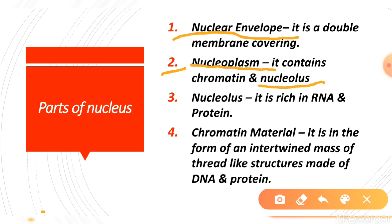The nucleolus is rich in RNA and protein. RNA and DNA are both called genetic material, which is responsible for our hereditary characters. DNA is present in the nucleus, and it carries genes, which are the hereditary units — meaning the characters of an organism are stored in genes.